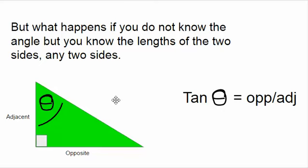The tangent function is the opposite divided by the adjacent. The slash — called a vinculum — just means division: opposite is the numerator, adjacent is the denominator. It's just a fraction and a pure number, like 1, 2, or 0.7. This pure number is cleverly stored in your calculator or on a chart.